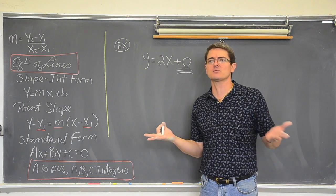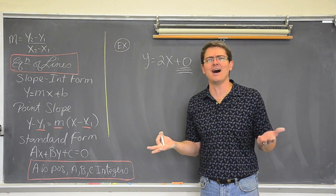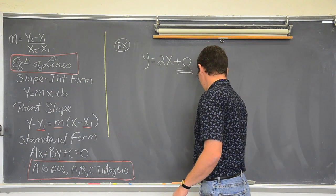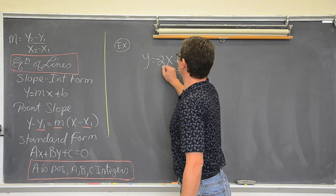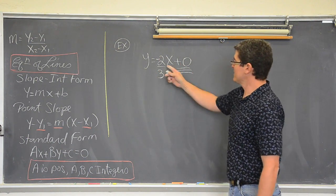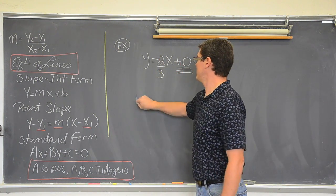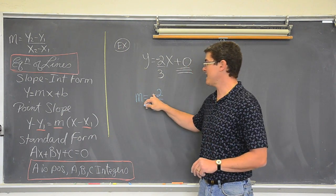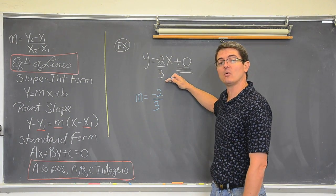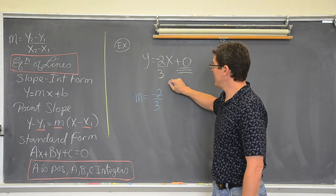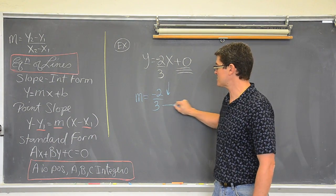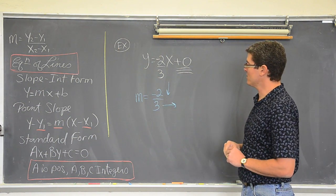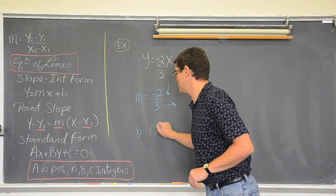We don't have to write plus zero because it doesn't change anything. So this line has a slope of negative two-thirds. The top number is rise — up or down — and it is going to go down because the slope is negative. The bottom number is always to the right; read those things left to right. So we have a slope of negative two-thirds and a y-intercept of zero.